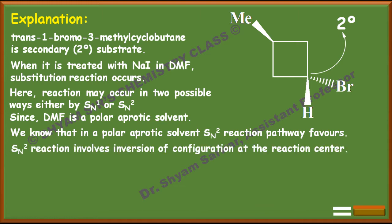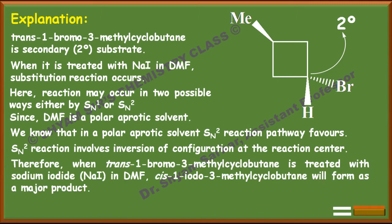SN2 reaction involves inversion of configuration at the reaction center. If you see the reaction center here, the configuration of Br is trans. So when I⁻ replaces Br⁻, it will be converted to the cis isomer.